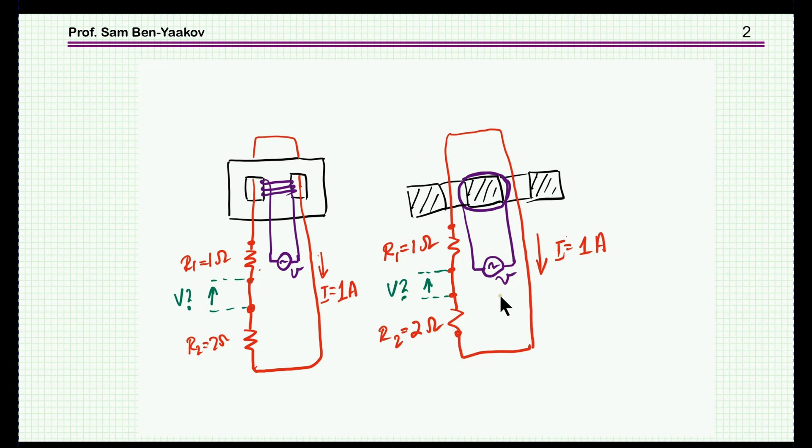And the question is, what is the voltage between these two points or these two points? Now, it's not trivial, because if we have a 1A current through this loop here, there is a 1V drop on the 1 Ohm resistor. There is a 2V drop on the second resistor. So what about Kirchhoff's law here?